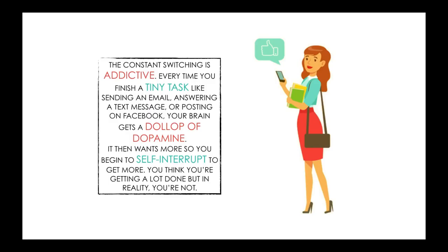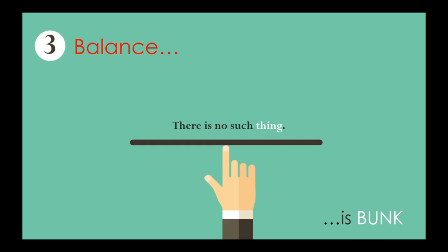The constant switching is also addictive. Every time you finish a tiny task like sending an email, answering a text message, or posting on Facebook, your brain gets what I call a dollop of dopamine. It then wants more of this dopamine because it's a pleasure hormone. It literally drives you and causes your brain to seek out other ways to get more dopamine, so you actually begin to self-interrupt to get more. And what's crazy is research has shown that those that do this think they're getting a lot done, but in reality, they're not. So you want to avoid not only being interrupted, but self-interruption.